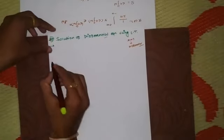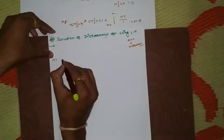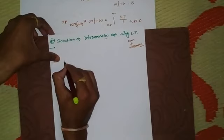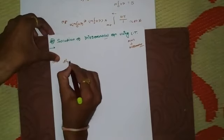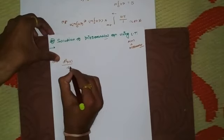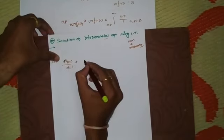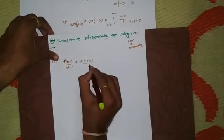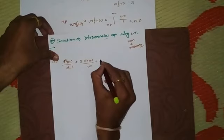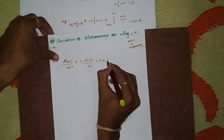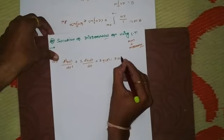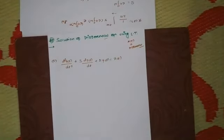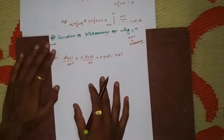Now we'll see with one example. Let's consider that we want to find solution of: d²y/dt² + 3·dy/dt + 2·y(t) = x(t). We have to determine its response, that is nothing but the impulse response.